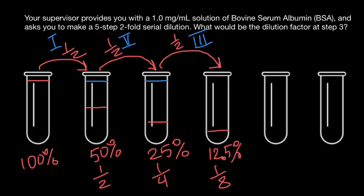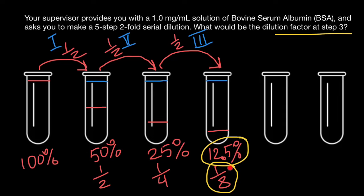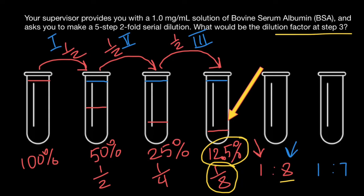The rest is going to be water. Our question is: what is the dilution factor at step number three? We have found the concentration, which is 12.5%, and we have found that this is going to be one eighth of the initial concentration. We can also express this fraction as a ratio — one eighth basically means one divided by eight. Here many students make a mistake, thinking that eight stands for the solvent. But actually it is not — eight here stands for the solution. So in order to get this concentration, we have to take one part of the stock solution and seven parts of the solvent. The dilution factor is the denominator part of the fraction, so our answer is going to be eight.